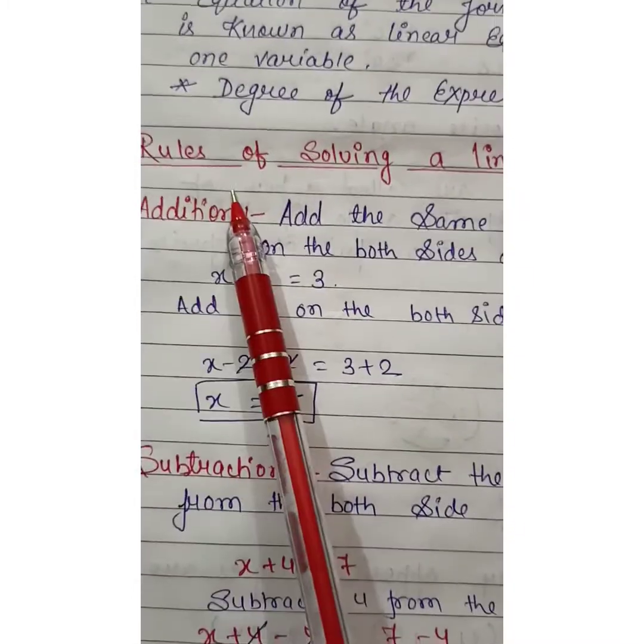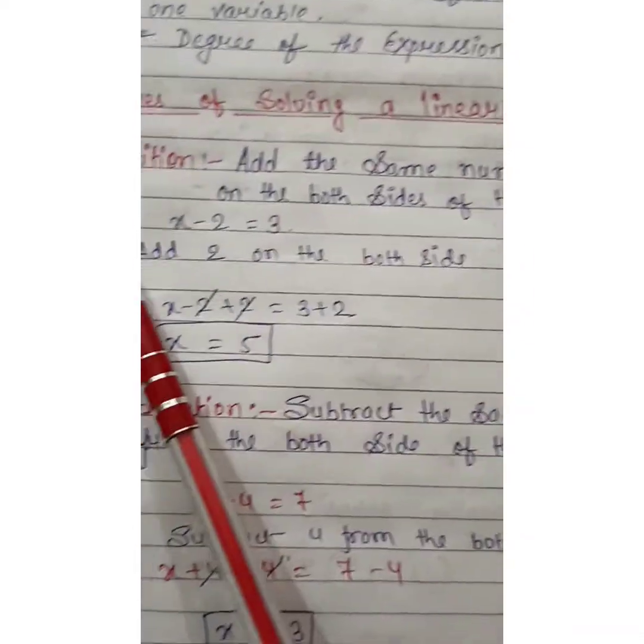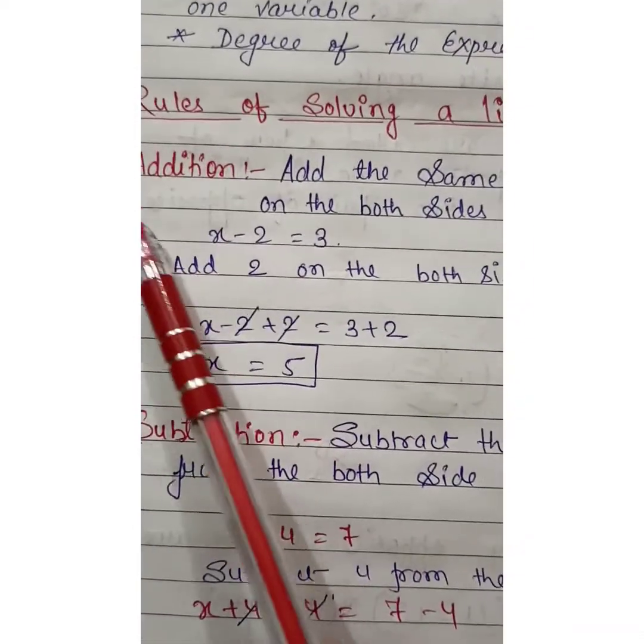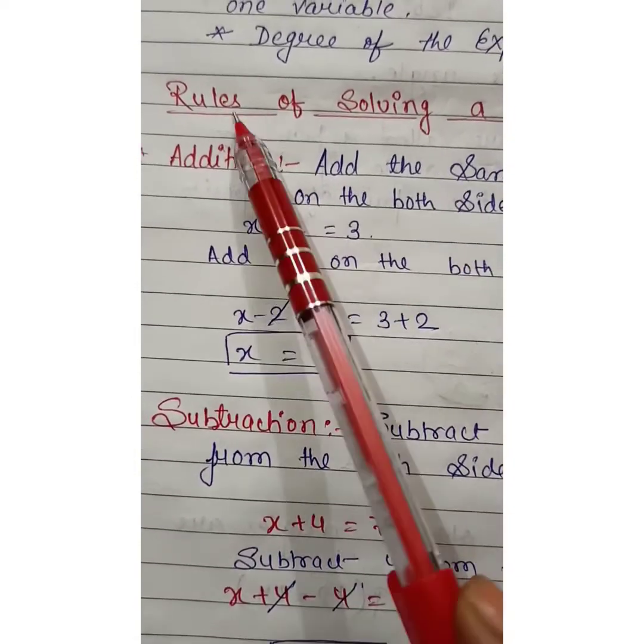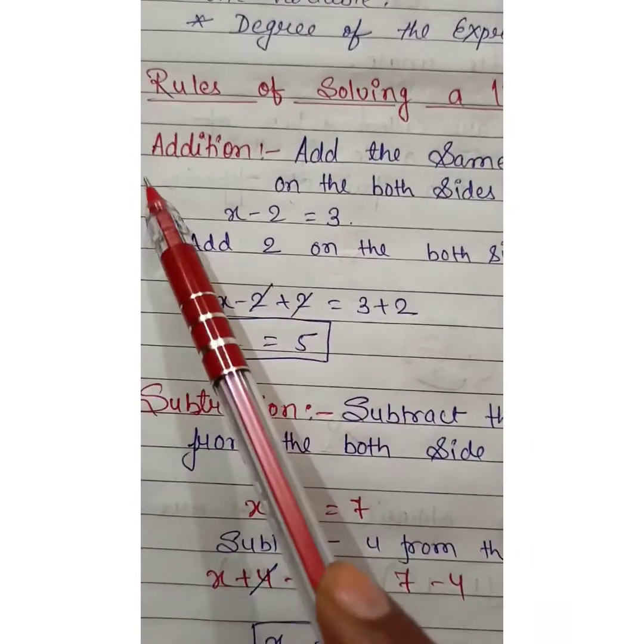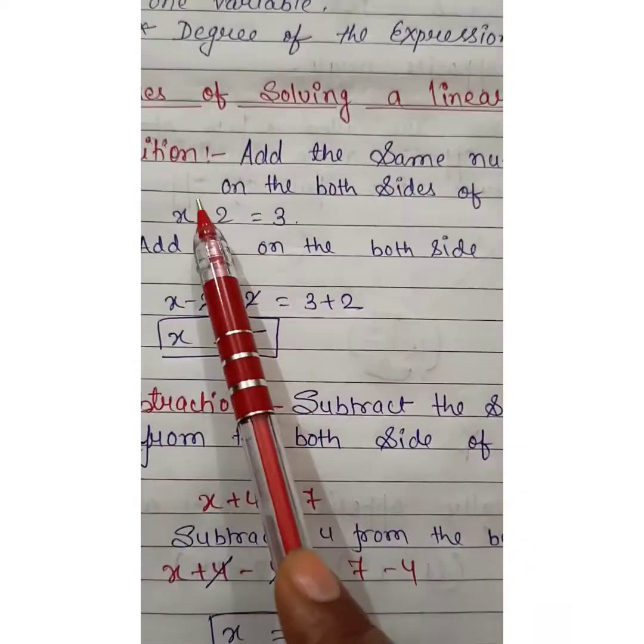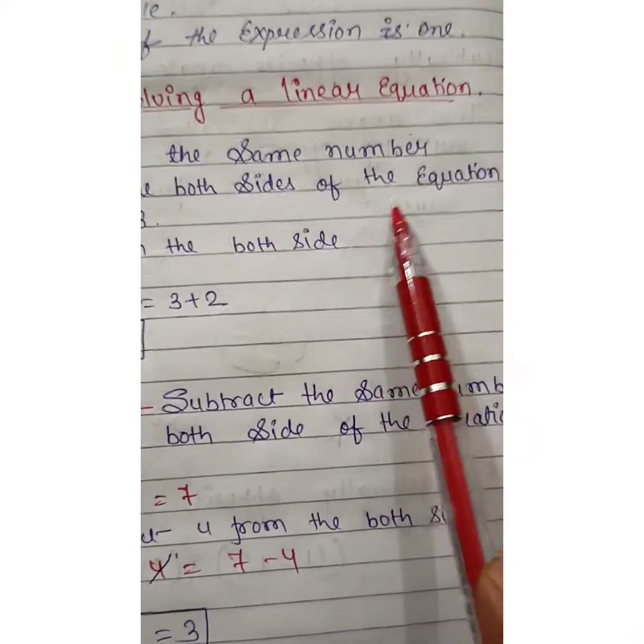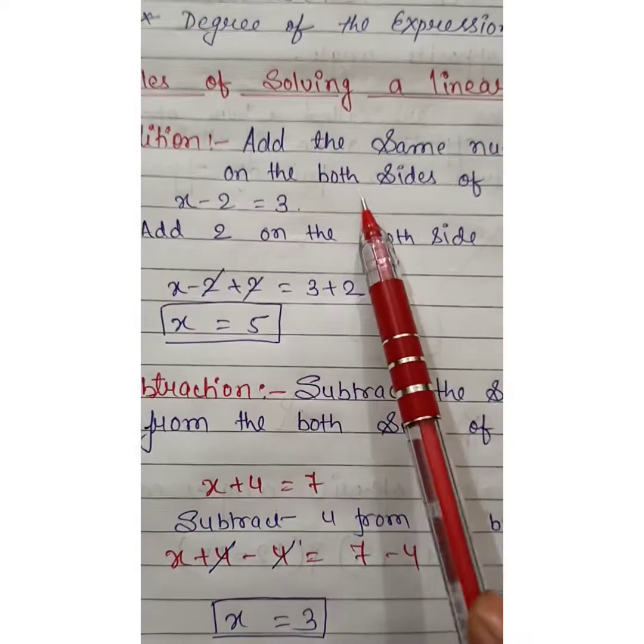Now there are various rules of solving a linear equation in one variable. First rule is addition. Add the same number on both sides of the equation.